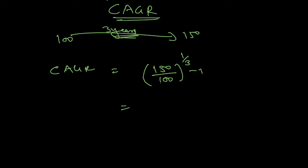So why do we do minus 1? See, here when I do 150 divided by 100, what I will get is 1.5 divided by 1 to the power 0.333. So what does this mean? It's telling me that 1 will become 1.5.